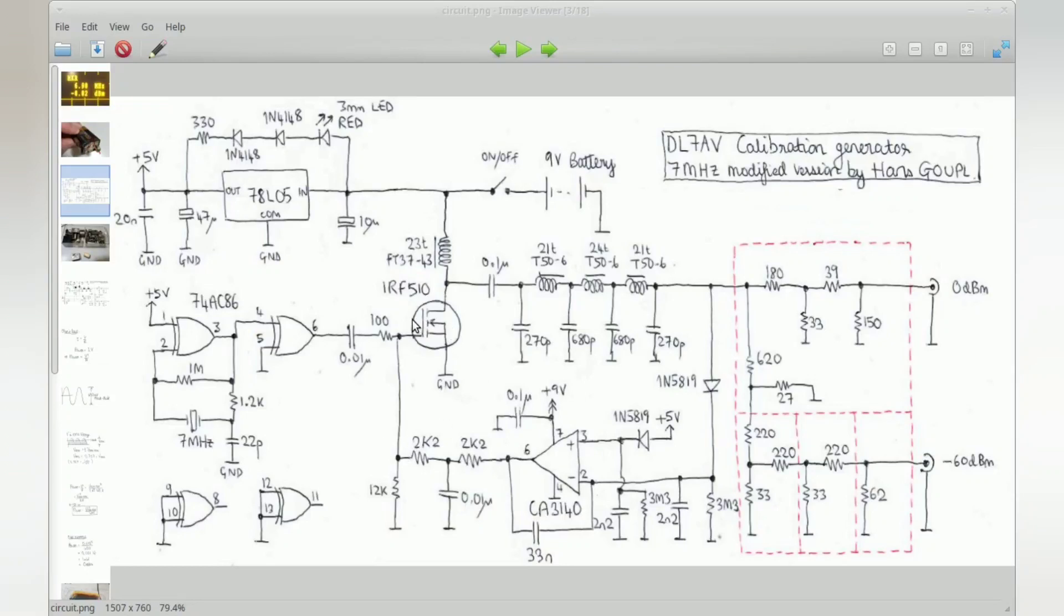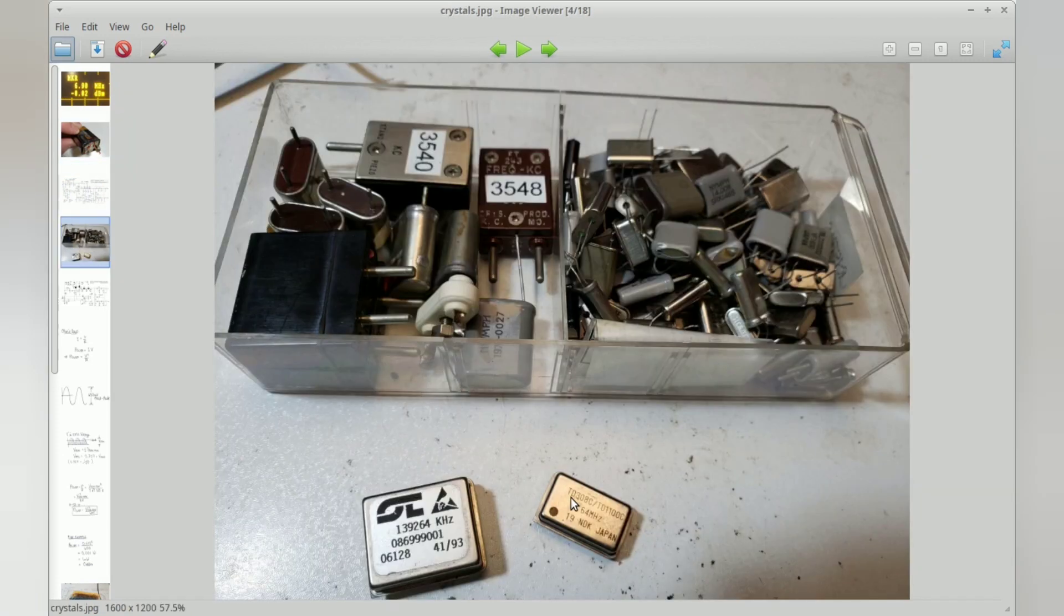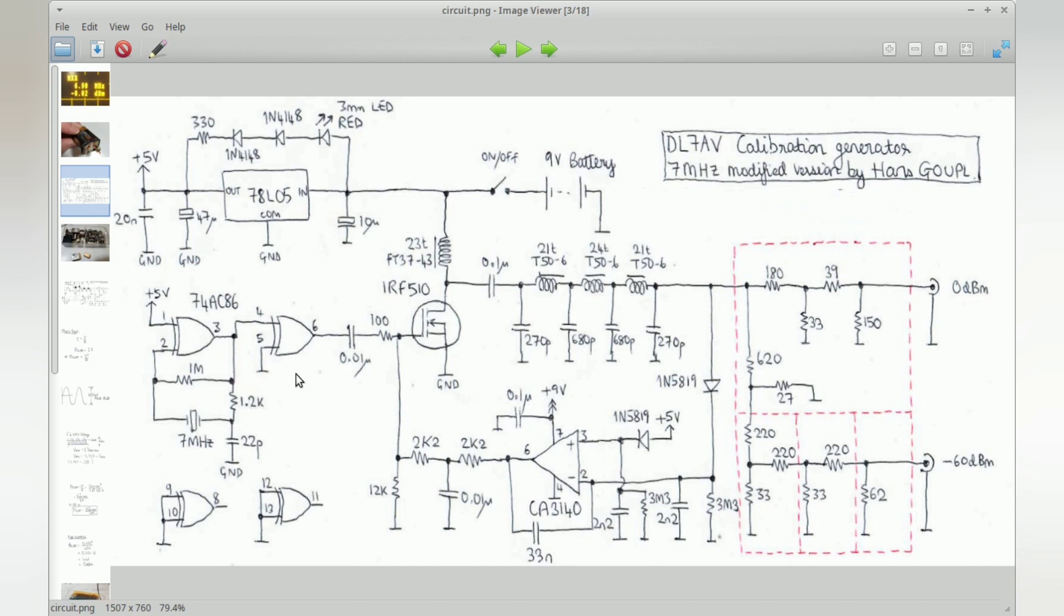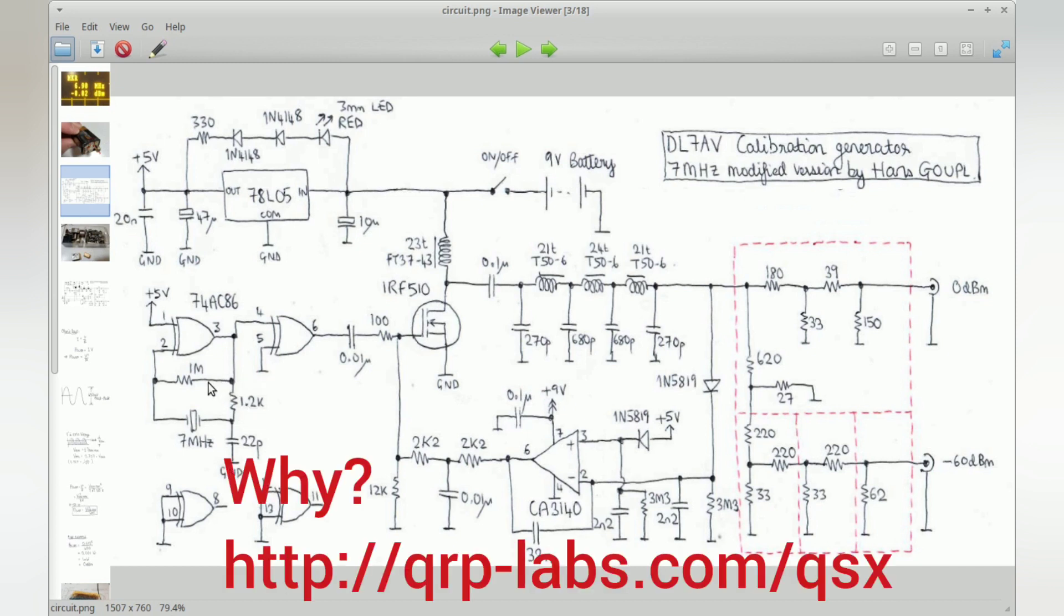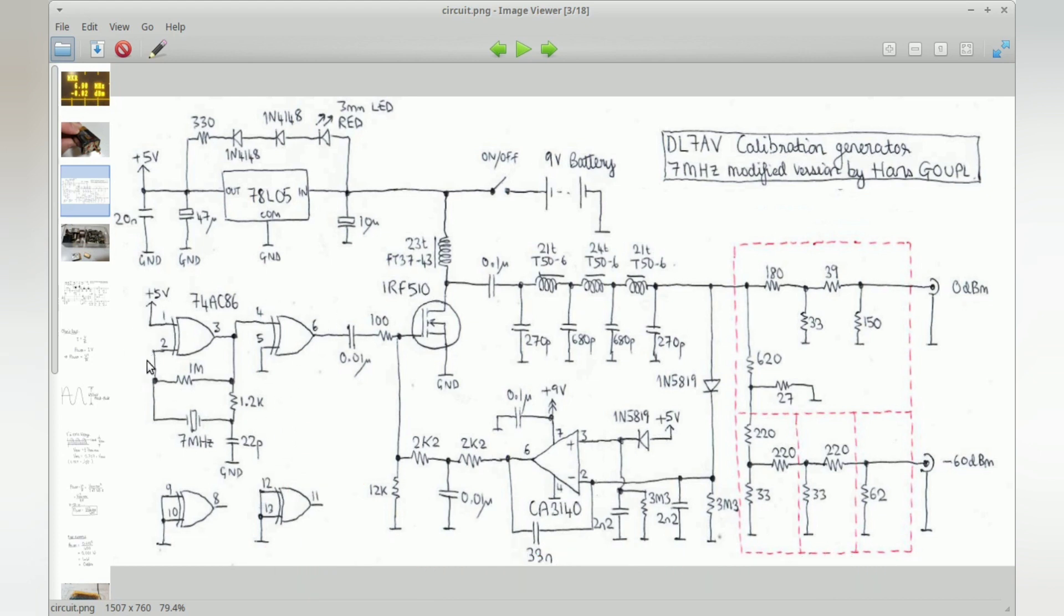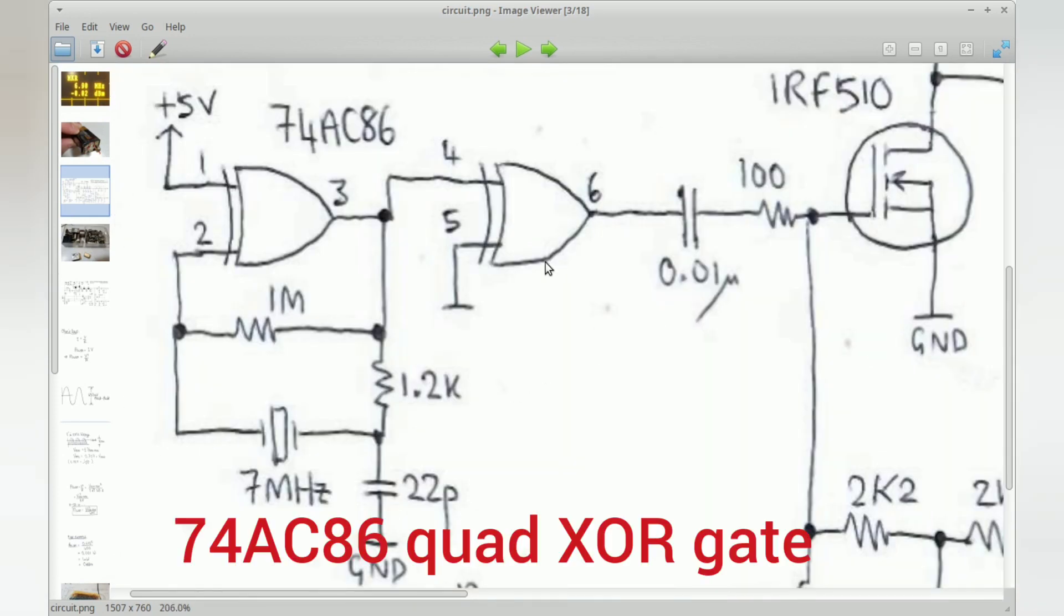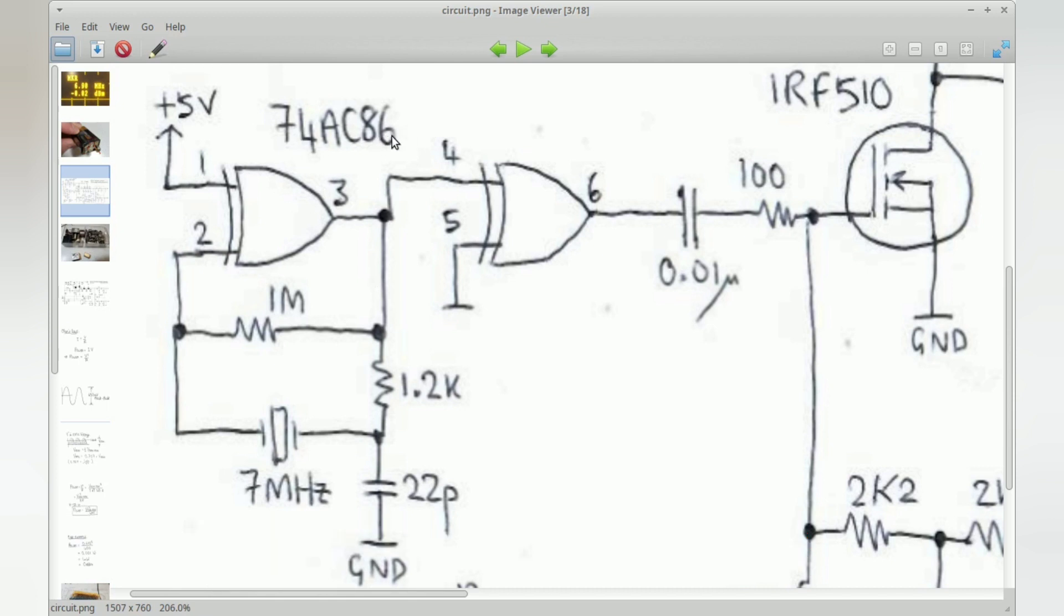This is the circuit as I actually built it. The first change is the oscillator circuit. Looking in my drawer of crystals, there was nothing at the frequency I was interested in. I was interested in a 7 megahertz version because the 40 meter band is what I'm working with most at this moment. I built this oscillator from inverter gates, a 74AC86 exclusive OR gate which I had in the junk box.